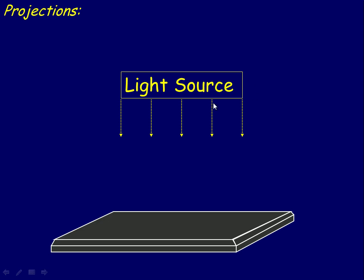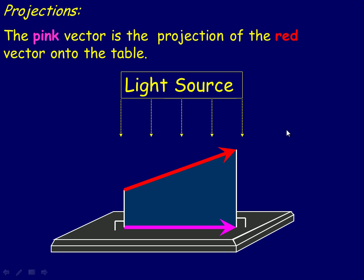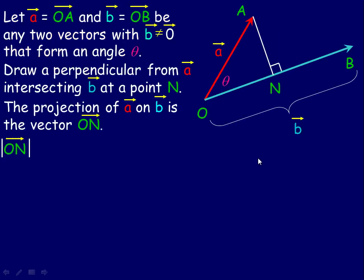Now, projections — that's the other part of this lesson. Think of a light source coming straight down, and we have this vector. Its projection is really the shadow on the table. If we draw perpendiculars at each end of the vector, that pink vector — think of it as a shadow — is the projection of the red vector onto the table.